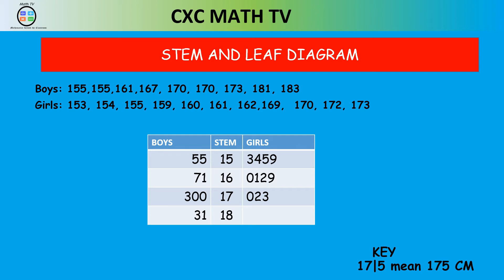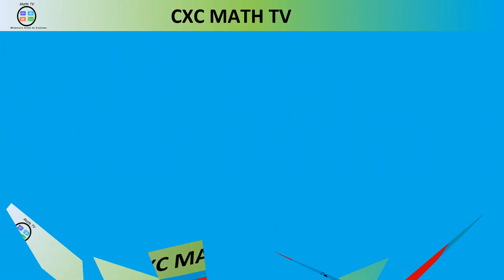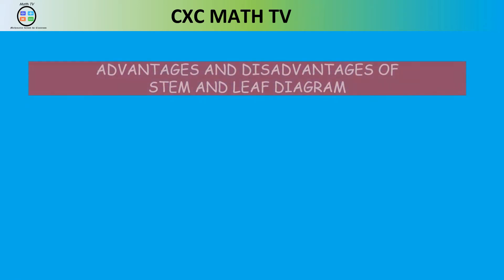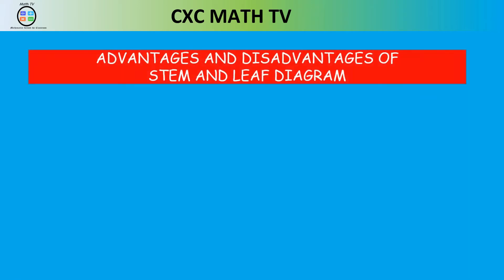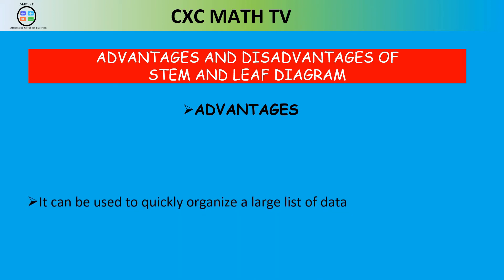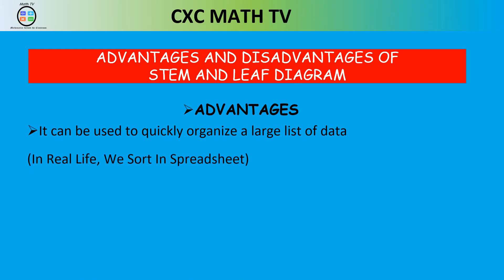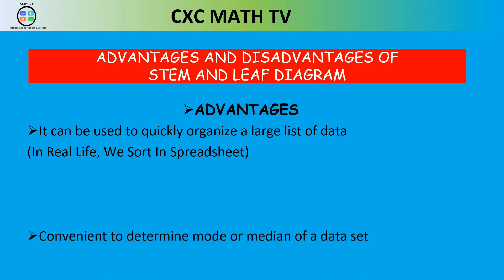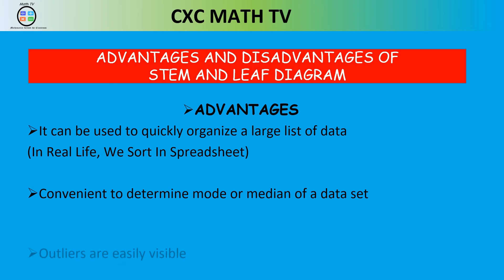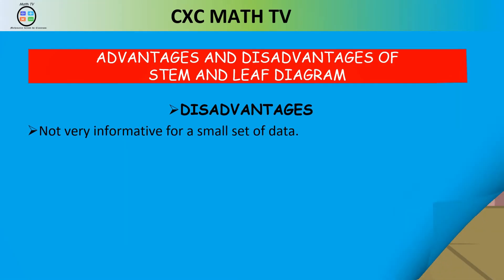The advantages of stem and leaf: it can be used quickly to organize a large list of data — in real life you'd use spreadsheets to sort it conveniently. It's easy to determine the mode and median, and outliers are easily visible. The disadvantage: it's not very informative for a small set of data; it's better suited to large data sets.